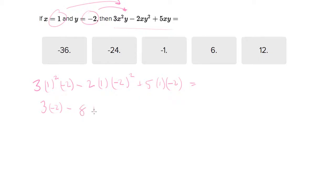Plus 5 times negative 2 is negative 10. So this is negative 6 minus 8 minus 10.